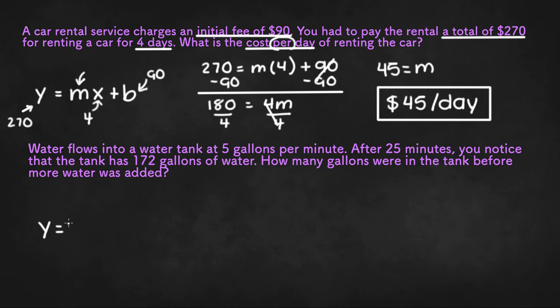So let's start by writing y equals mx plus b. We can underline the three numbers given: 5 gallons per minute, 25 minutes, and 172 gallons of water. And we're asked to find the number of gallons before more water was added, so gallons before.